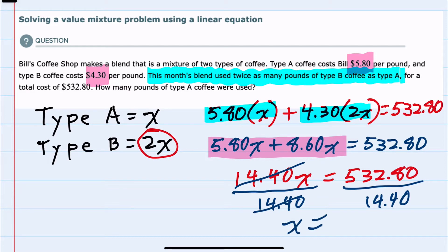On the right-hand side, doing that division would give us 37. So type A is 37 pounds.